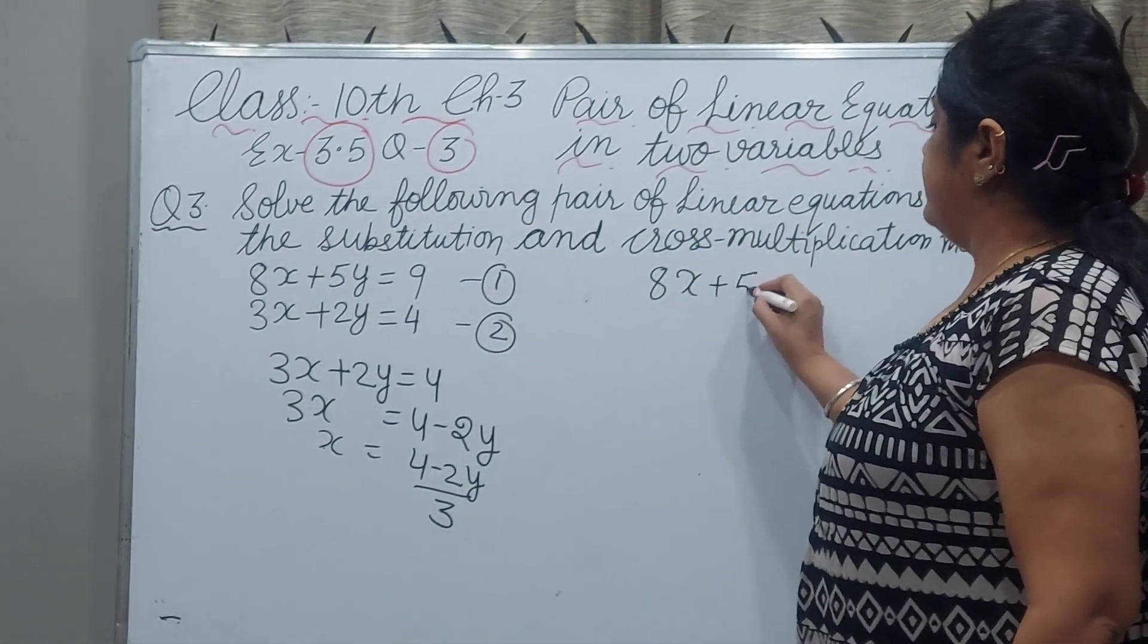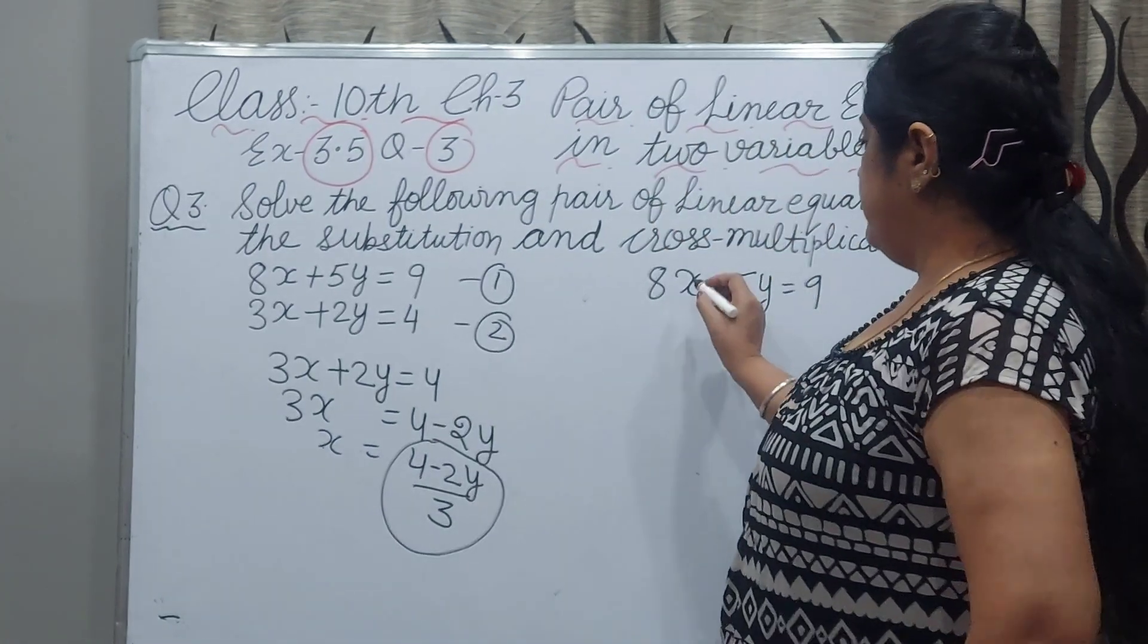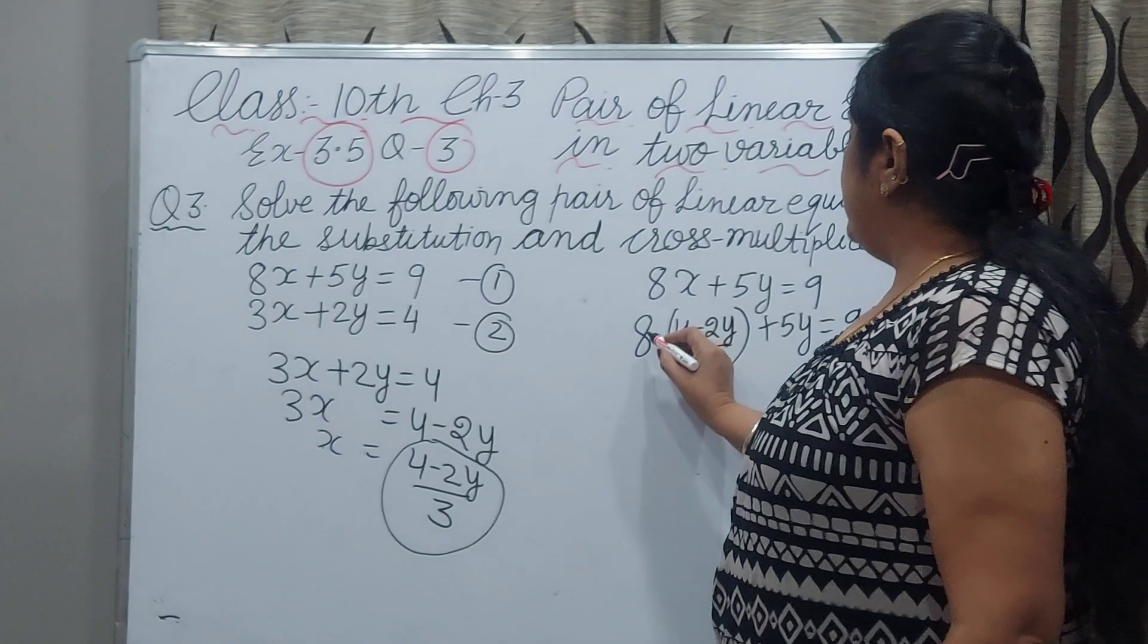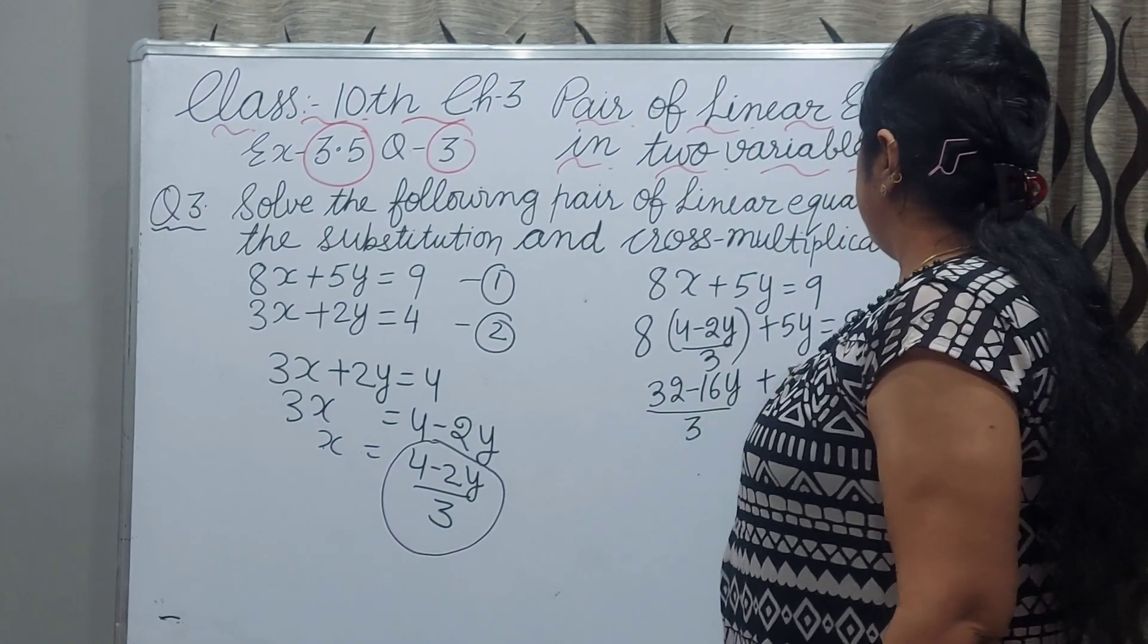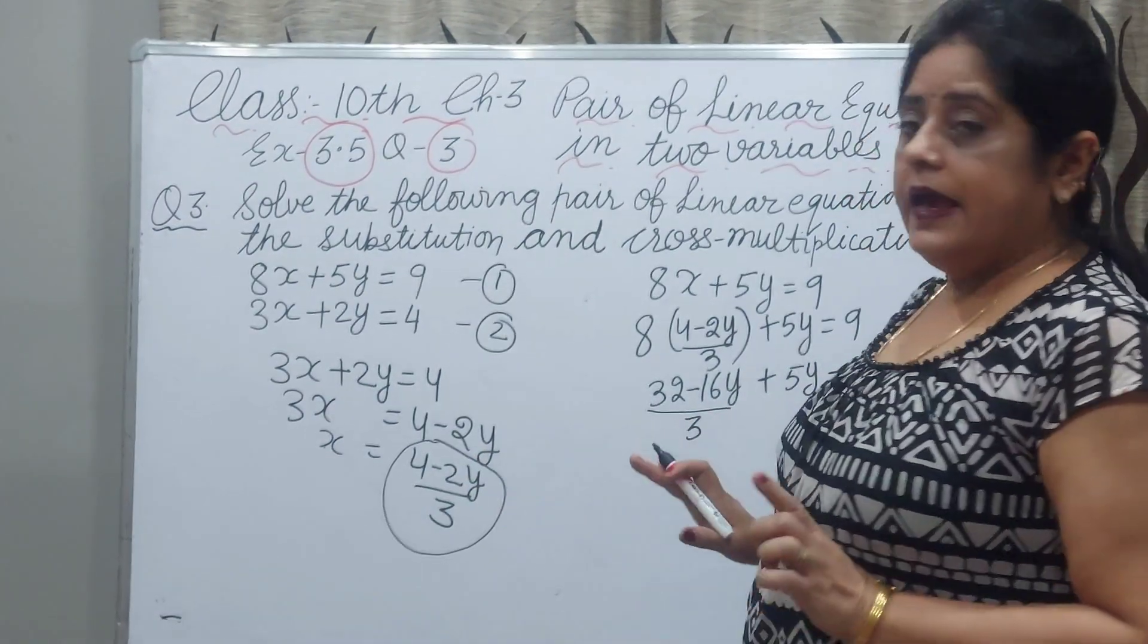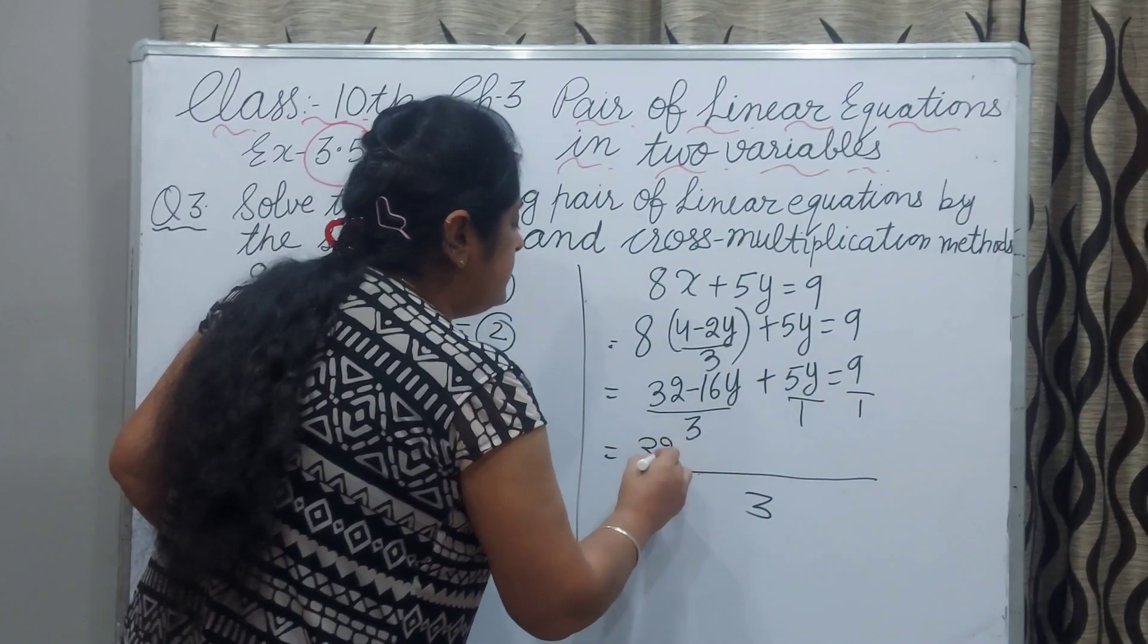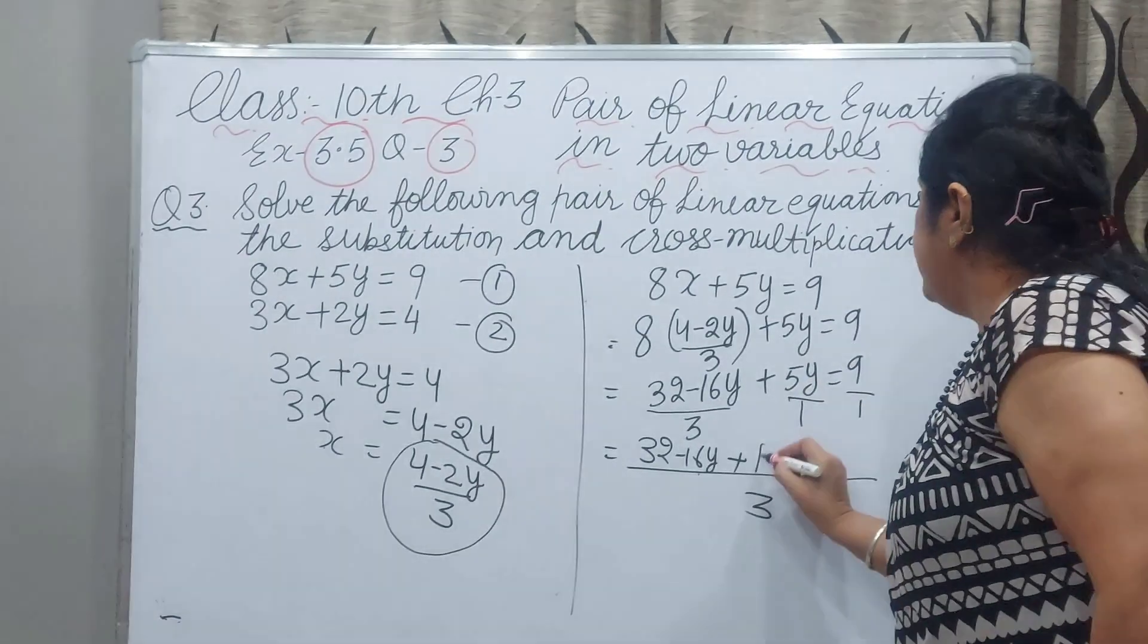8x plus 5y equals 9. This value of x we will substitute here. 8 times (4 minus 2y by 3) plus 5y equals 9. Now multiply 8 with 4, 32 minus 16y by 3 plus 5y equals 9. Now we will take 3 for the whole equation. If nothing has denominator you can write 1. It will be 32 minus 16y, and 3 divided by 1, 3 multiplied by 5, 15y plus 15y.